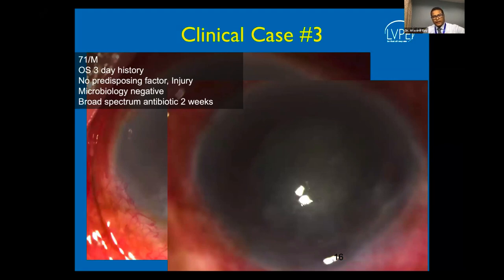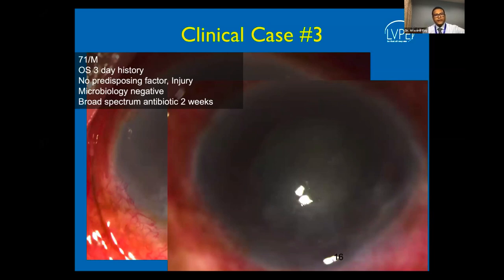An important differential in fungal keratitis is HSV stromal keratitis, where the clinical picture can be very confusing. Points in favor of HSV include a history of repeated recurrence, a much more chronic duration, florid vascularization, areas of scarring, and footprint scars, which help the clinician distinguish between fungus and virus.